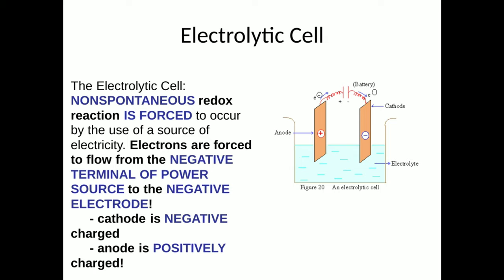Electrolytic cells are different from voltaic cells. From this picture, you'll notice that voltaic cells always occur in two beakers. An electrolytic cell will occur in only one beaker. Here, we will have a non-spontaneous redox reaction occur. Because the reaction is not spontaneous, it's going to require a power source. In Regents Chemistry, our power source almost always is a battery, though in real life, the power source could also be direct current from an outlet.